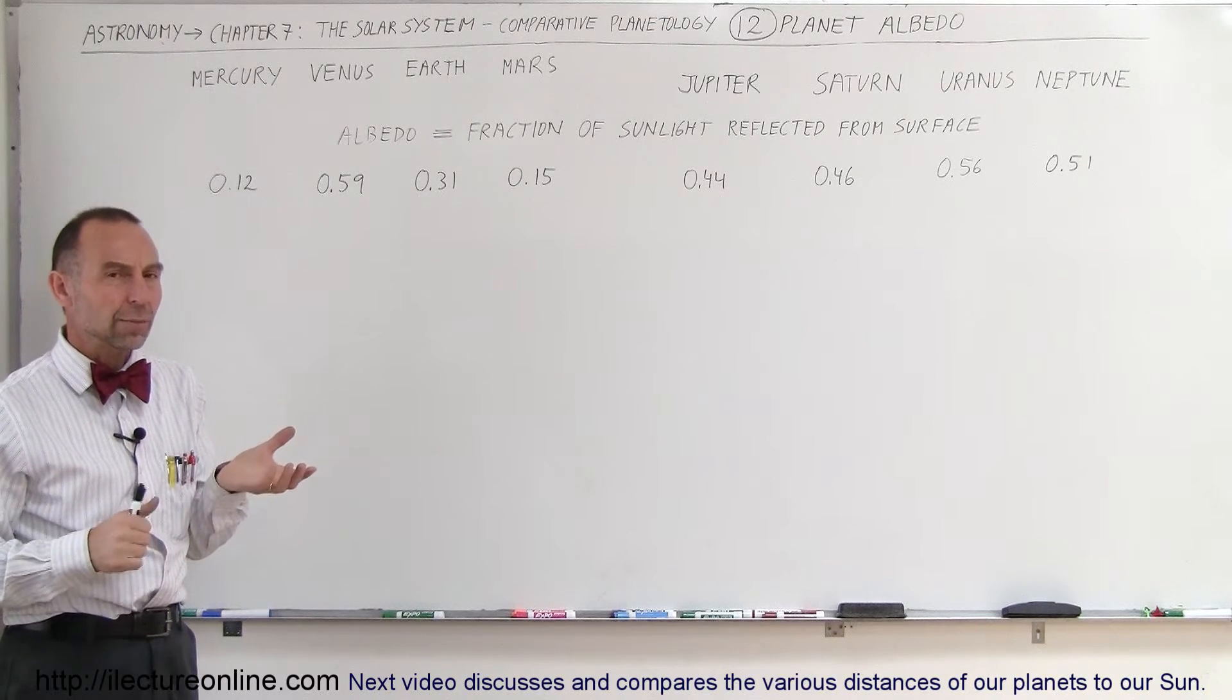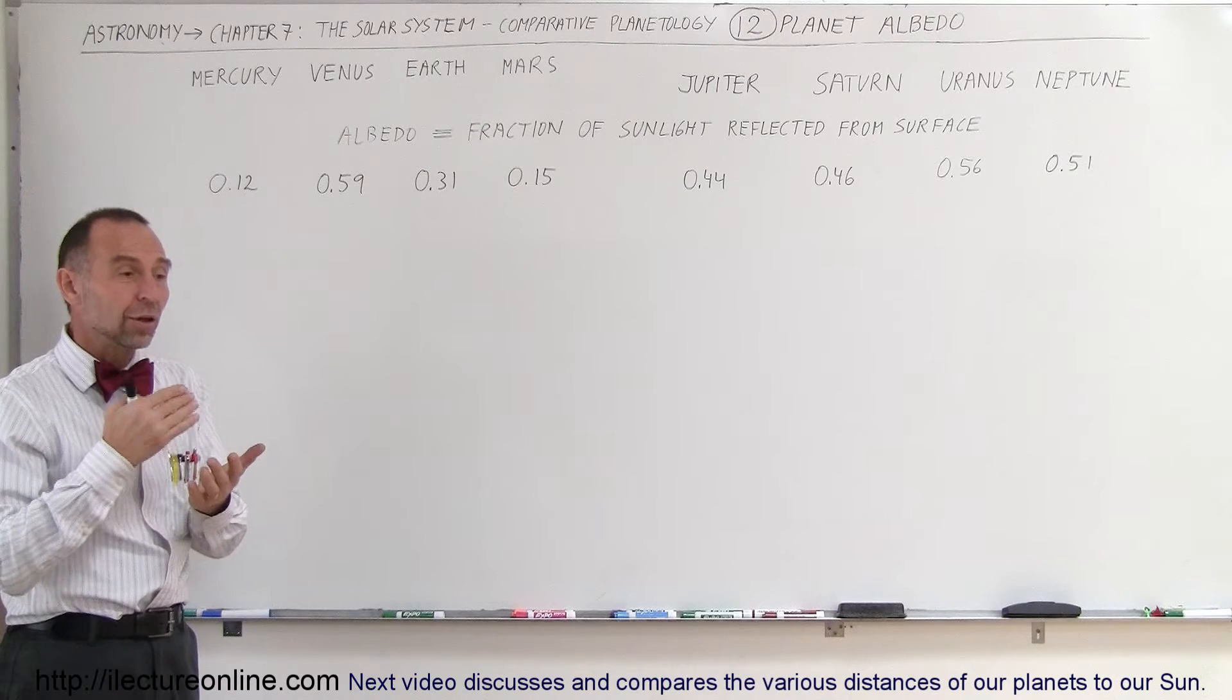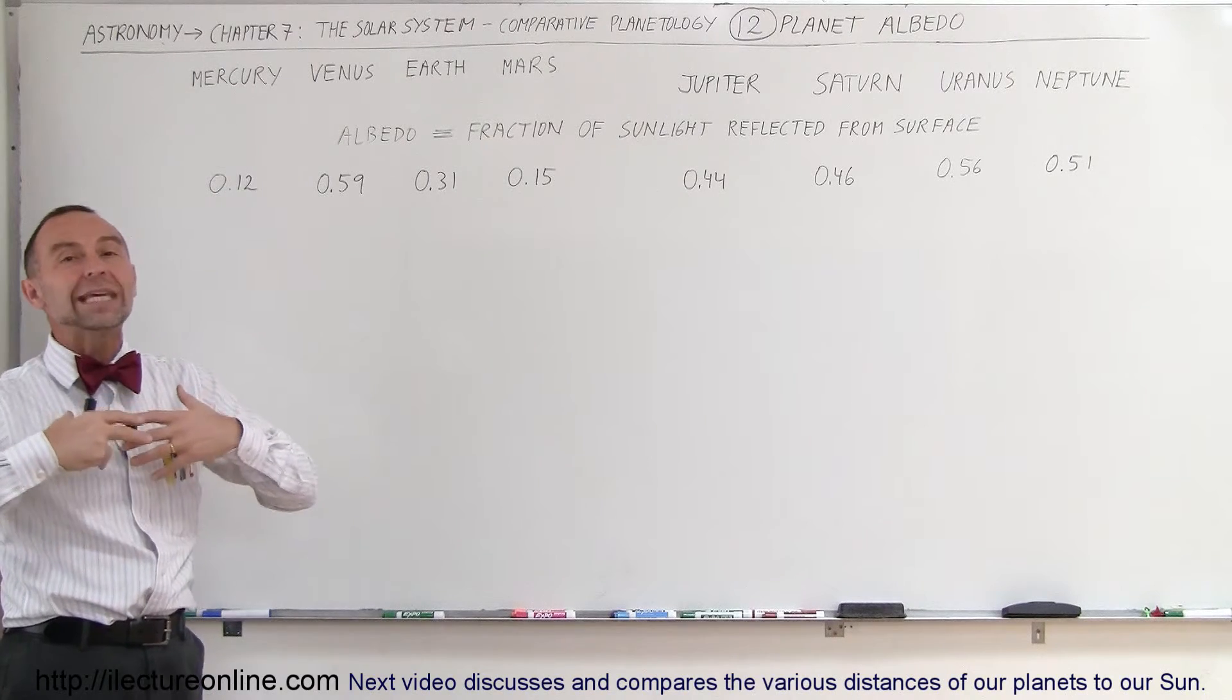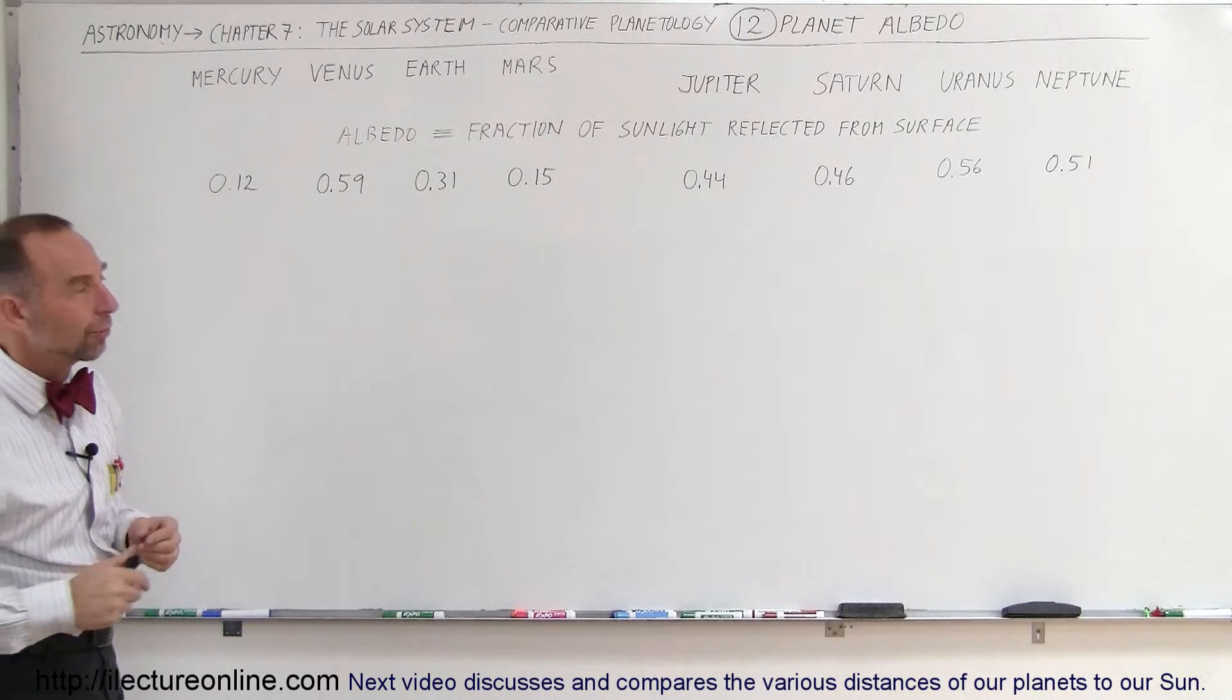So, the lower the number, the more heat that is absorbed. The greater the number, the more the heat is reflected, the more the sunlight is reflected.